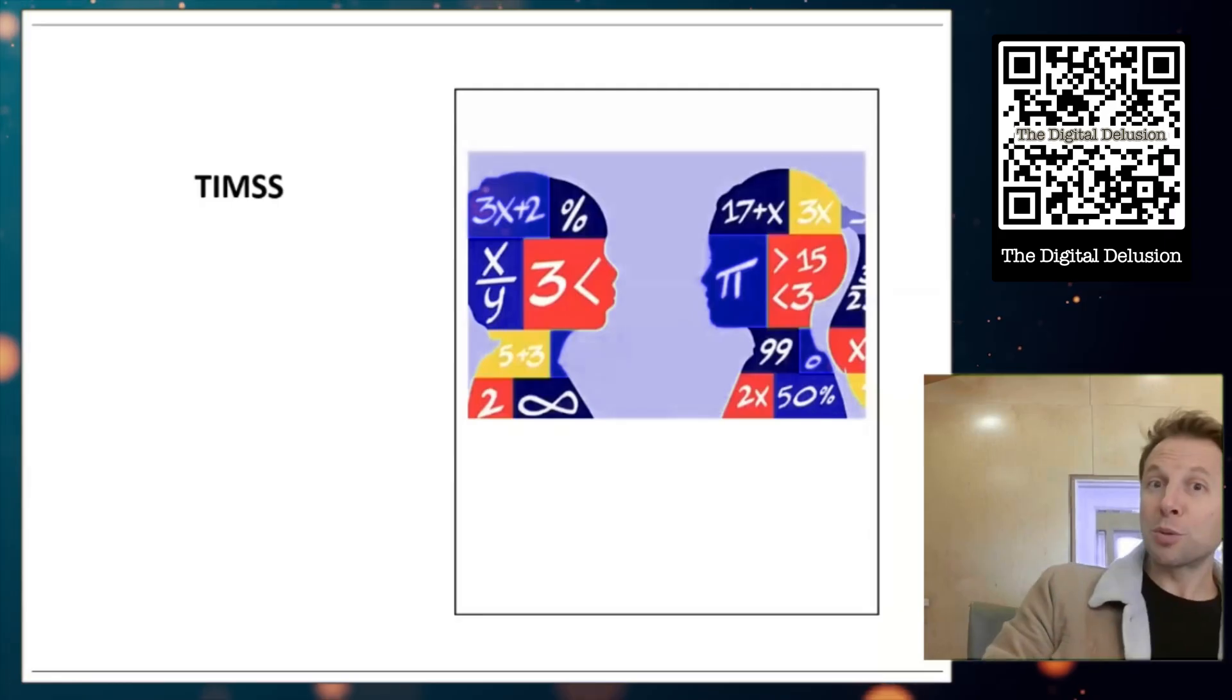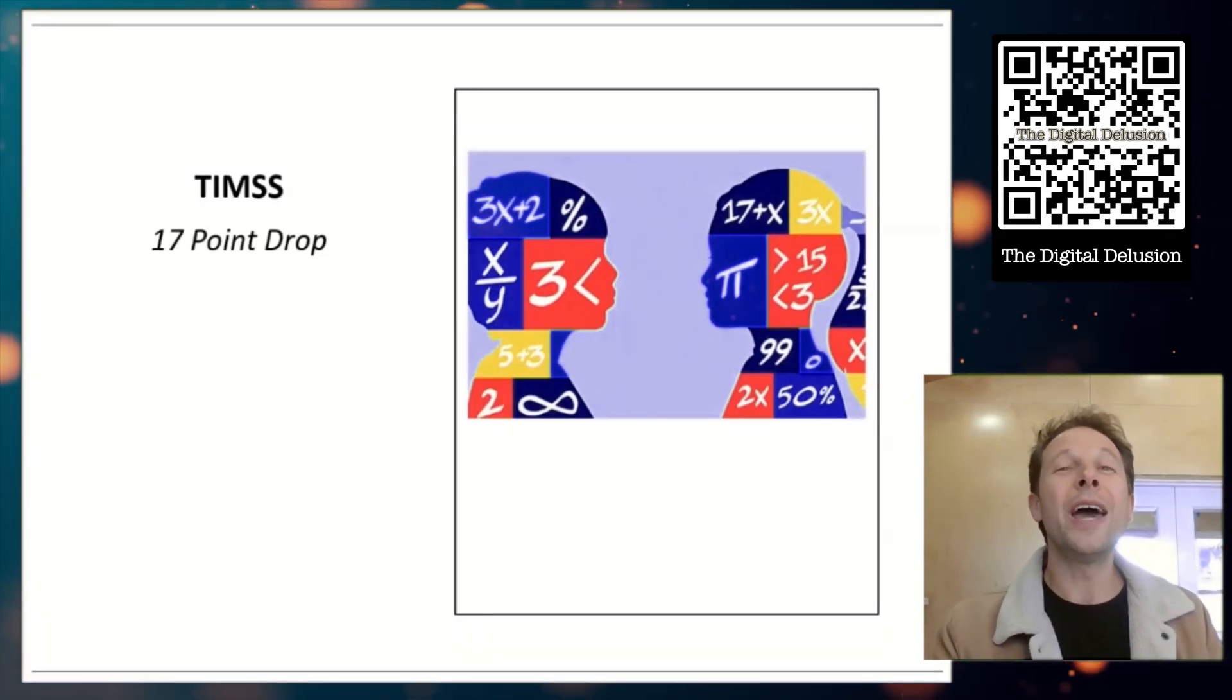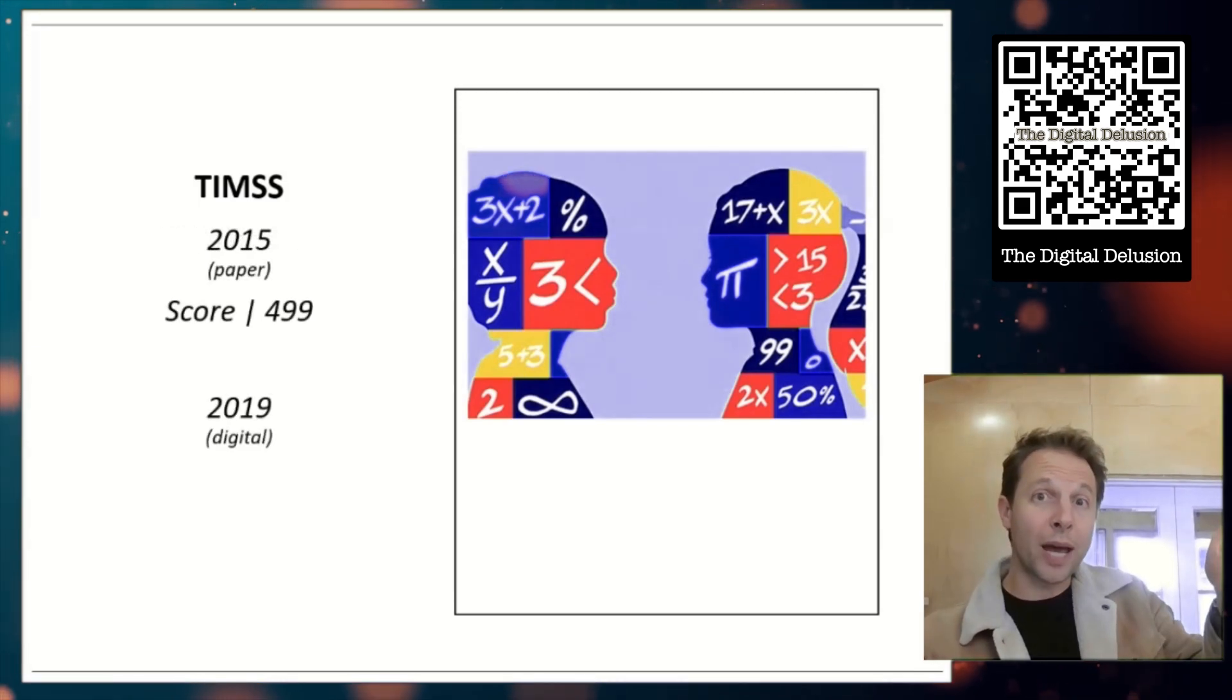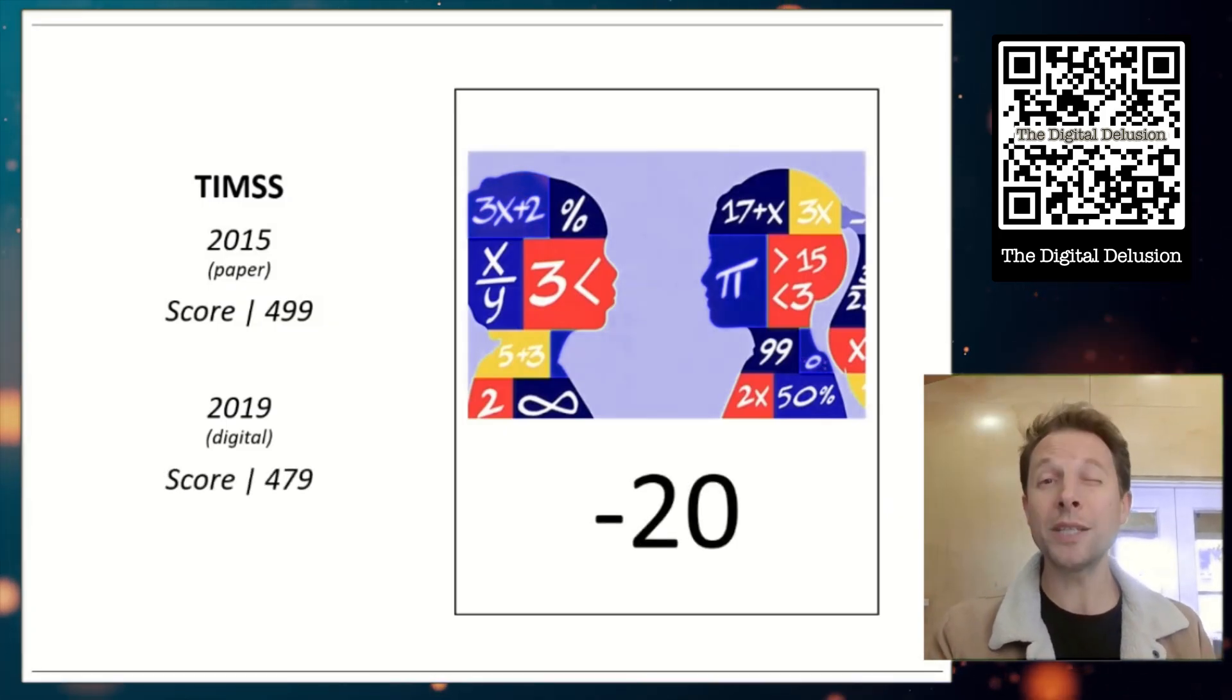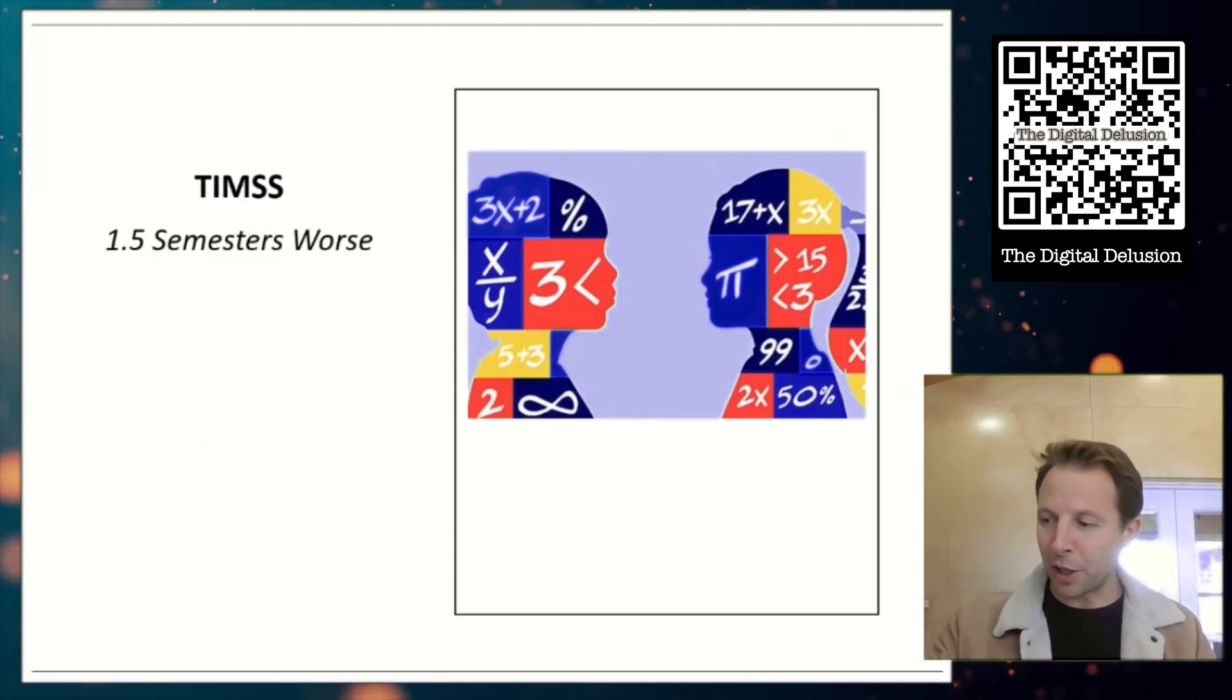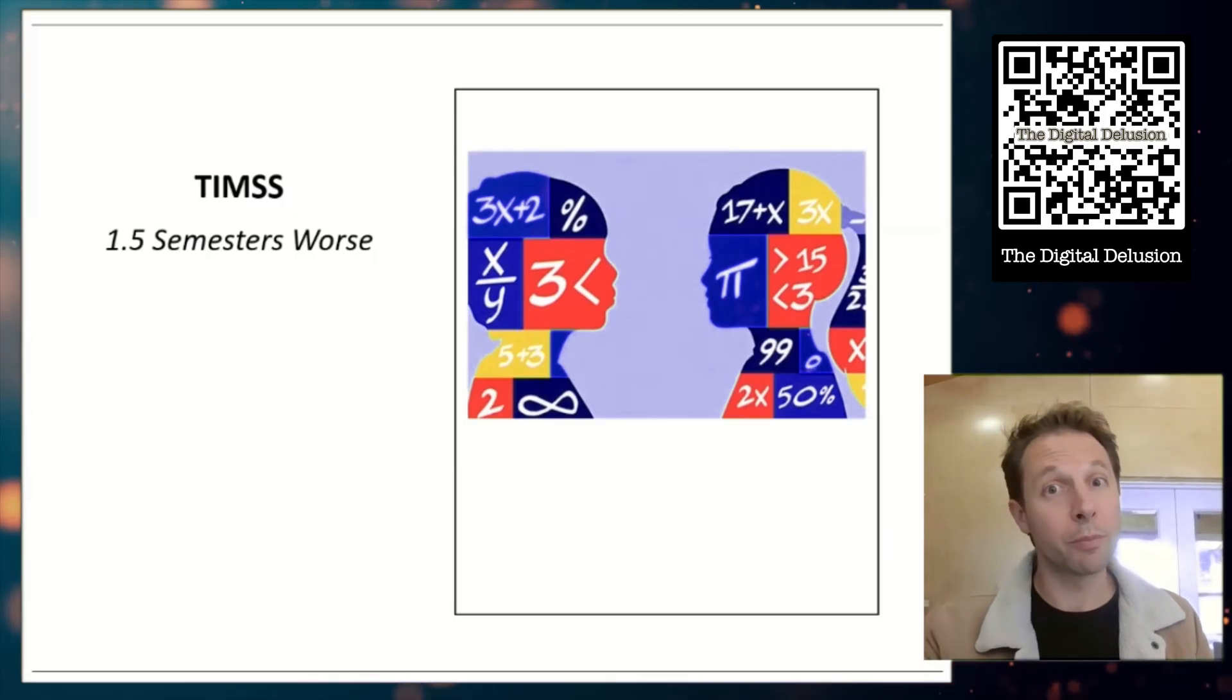But what about TIMSS? Same thing. You got to do some real digging. But when you do, you find out when TIMSS moved digital, they showed a 17 point drop on average. So going back to our scores, the last time they did paper, we're looking at 499. When they moved digital, we're really looking at 479. That's a 20 point drop. Now, what does that mean in context? That's about one and a half semesters of learning worse. Simply by going from paper to screens, one and a half semesters of learning just gets wiped from your performance.